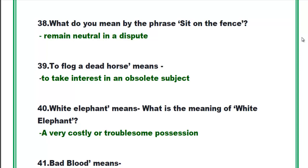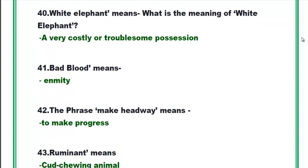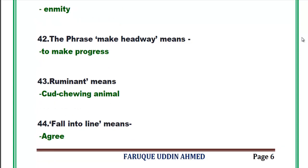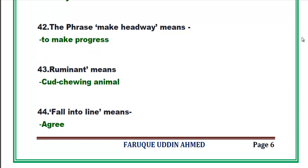White elephant means what is the meaning of white elephant? A very costly or troublesome possession. Bad blood means enmity. The phrase make headway means to make progress. Ruminant means cud chewing animal. Fall in line means agree.